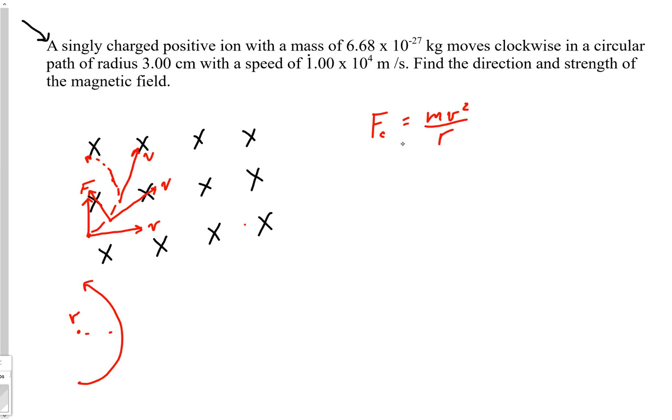So kind of like in the other example where we said MA equals QVB, all we're going to do to do this problem is set it up like this. And say that MV squared over R equals QVB. And so what this problem wants you to do is find the direction and strength of the magnetic field. So all we've got to do is try and figure this out. We may have to go back and read it to actually figure out the whole direction thing. We'll do that in a second.